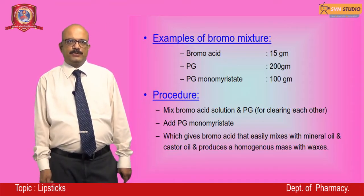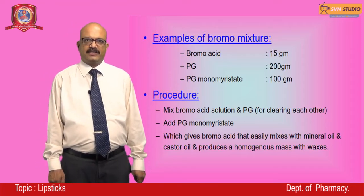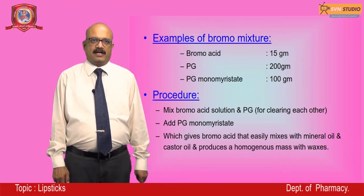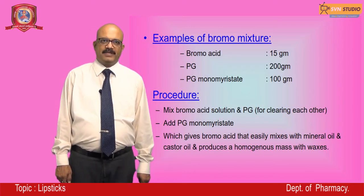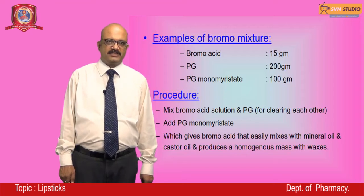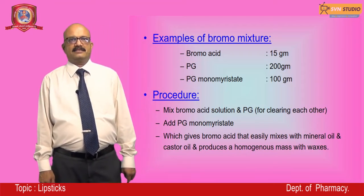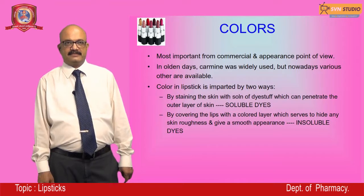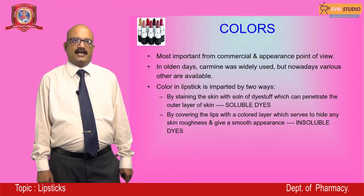The procedure to prepare the bromo mixture: mix the bromo acid solution with propylene glycol, then add PG monostearate. This gives a bromo acid that easily mixes with mineral oil and castor oil, producing a homogeneous mass with waxes.